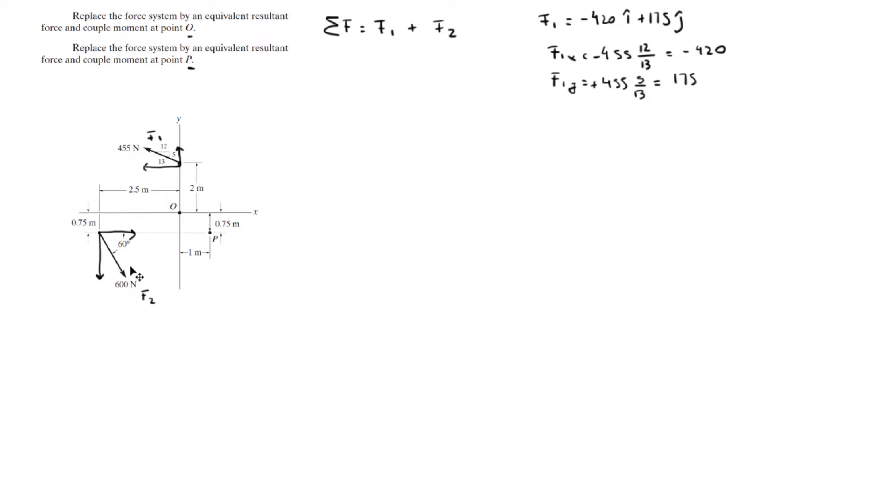So now we need to find F2 in the same manner. F2 in the X, F2 in the Y. So the X component, we have an angle, so we're going to find it by doing the magnitude, 600 times the cosine of 60. And since it's going towards the right, it's positive. So that is equal to 300.